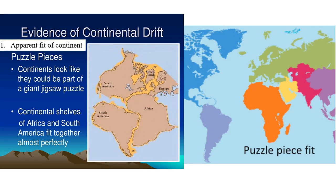Here is the first evidence. If you look carefully at Earth's continents, they look like puzzle pieces that fit together. If you look at certain coastlines, like the eastern coast of South America and the western coast of South Africa for example, they look like they belong together. Wegener believed there was a time when they were all connected and have since drifted apart to their current locations.